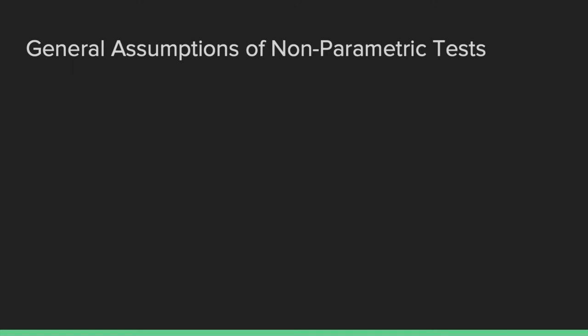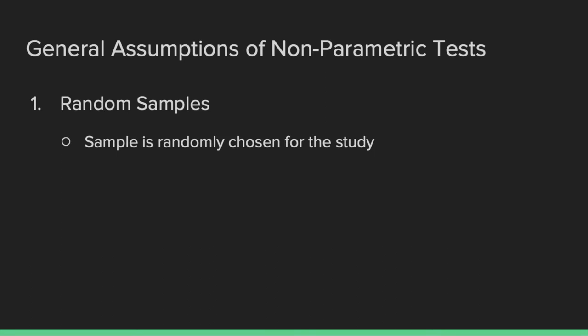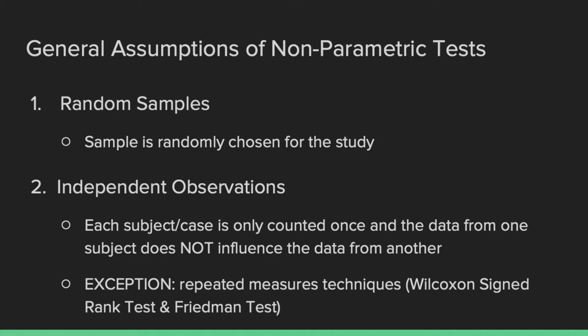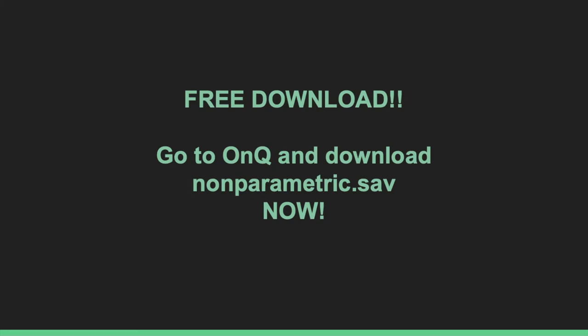There are general assumptions that apply to all the tests we're going to be talking about today. The first is that the sample must be randomly selected, and secondly, that the observations are independent — meaning each subject is only accounted for one time and the data from one subject does not influence another. There is an exception: independence is not required for tests that look at repeated measures, specifically the Wilcoxon signed rank test and the Friedman test. As we are covering six different types of nonparametric tests today, we have merged all the data sets into a single file that can be downloaded from ONCU. Feel free to open that now so you'll have it ready to follow along during the SPSS portions coming up shortly.